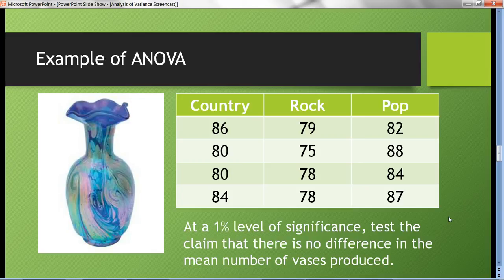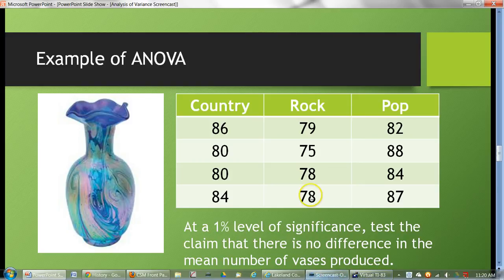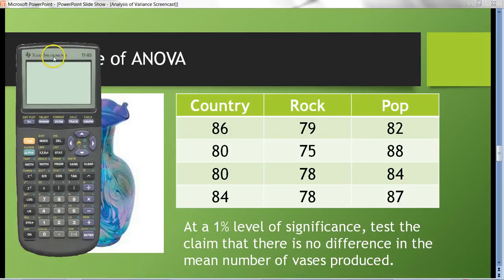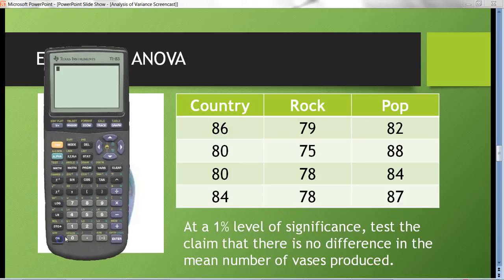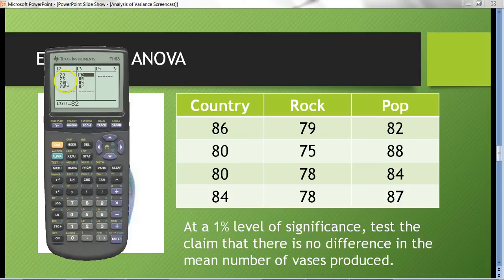Before we get to the actual hypothesis test, let's enter the data in our calculator. Turn on the machine, go to stat to enter this data, and go to edit. Notice I entered the data in list number one for the country, list number two for the rock, and list number three for the pop.